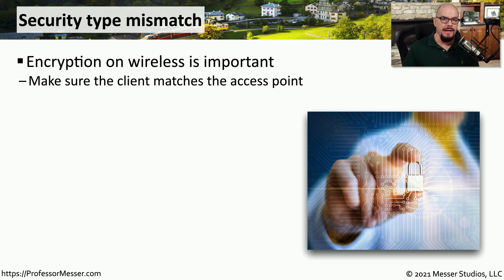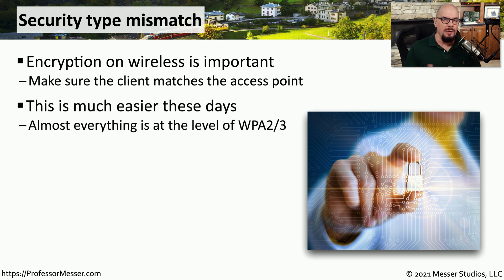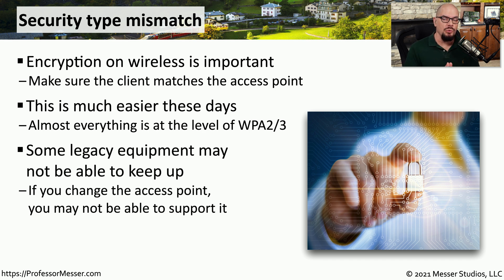When connecting from a wireless device, we need to make sure that the encryption we're using on that device is the same as the supported encryption types on the access point. If there is a mismatch or incompatibility between those devices, your device will not connect to the wireless network. Now that WPA2 has been out for so long, it's difficult to find devices that can't support a minimum of WPA2. But you may find a legacy device that simply doesn't have the technology to connect to a WPA2 or WPA3 wireless network. In those cases, you'll need to decide what to do — there may be a wired option, or you may have to use a different access point to allow that legacy device to connect.